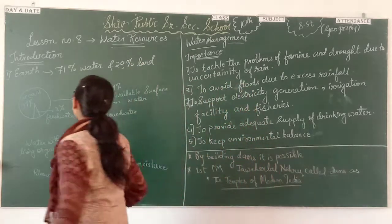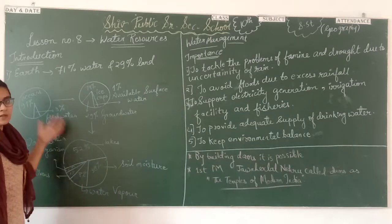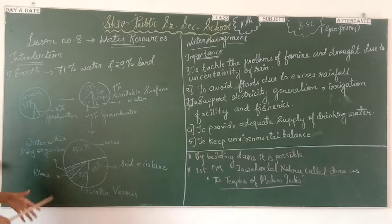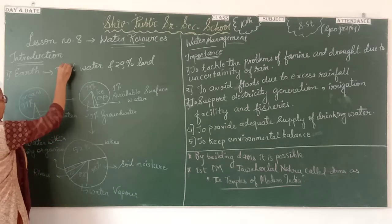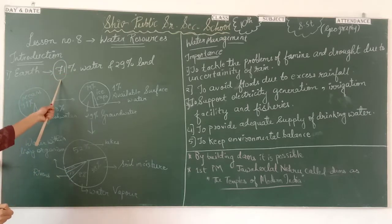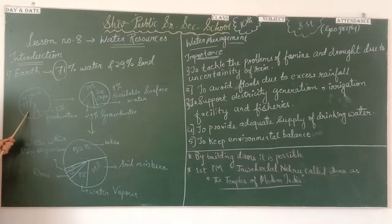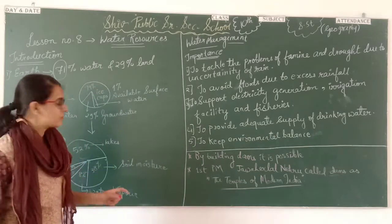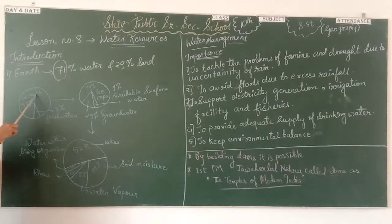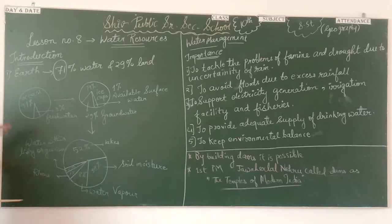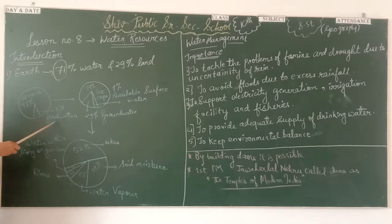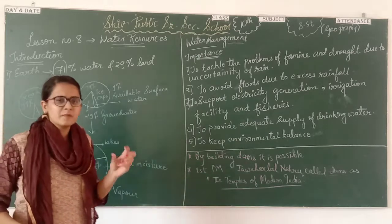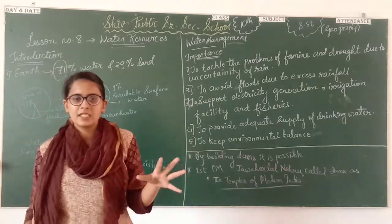If we consider this 71 percent of water, how much of it is salty? Salty water is the most abundant — 97 percent is in oceans and seas. So 97 percent of all water on earth is in oceans and seas, which means it is saline. That leaves only 3 percent as fresh water.